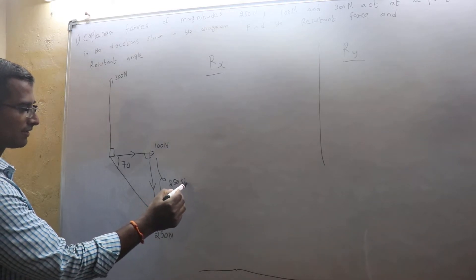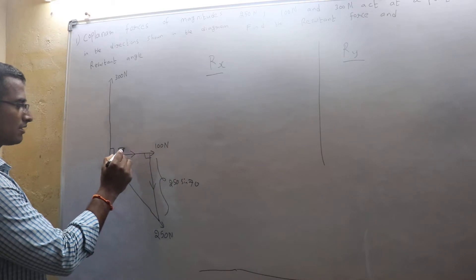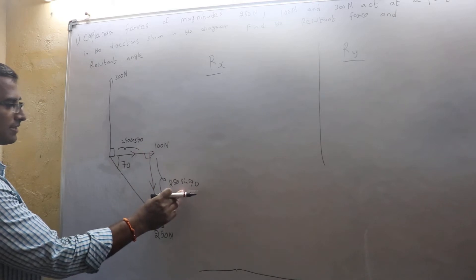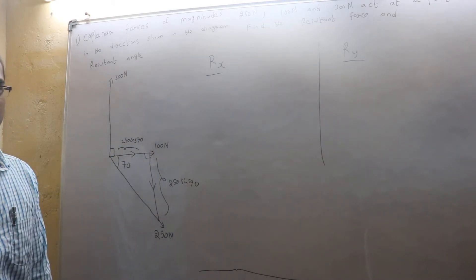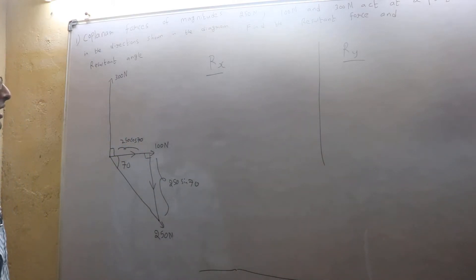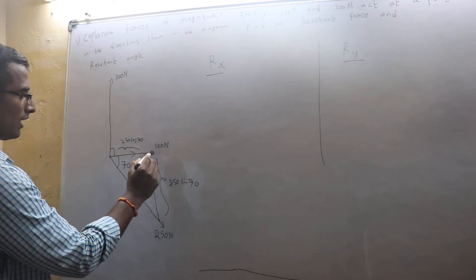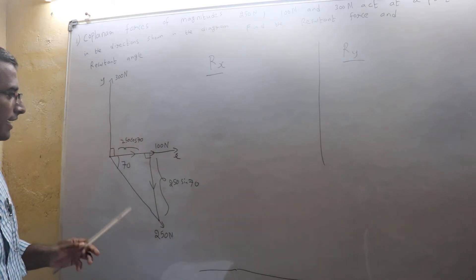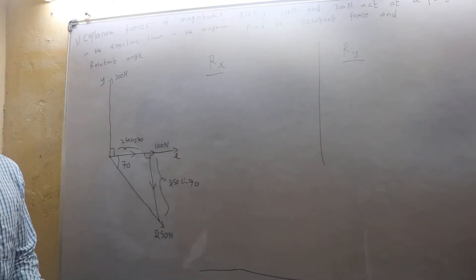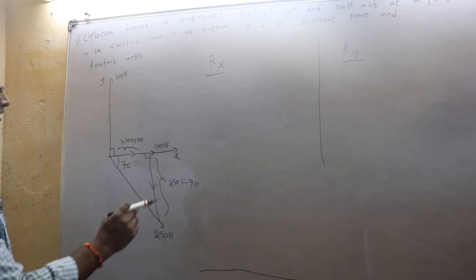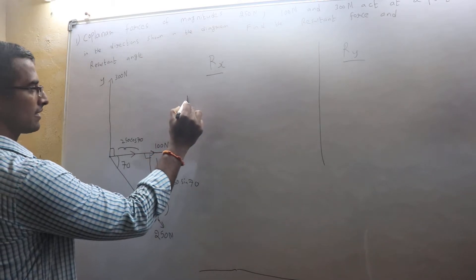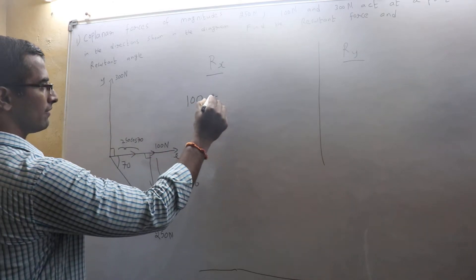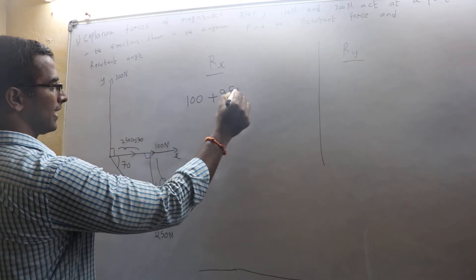And you know this will become 250 sin 70 and this part will become 250 cos 70. Opposite sine, adjacent cosine. Now the next one: Rx. If I assume it to be x-axis and this to be y, what all are acting on x-axis? 100 is acting on x-axis in this direction. Same way, 250 cos 70 is also acting in the same direction.